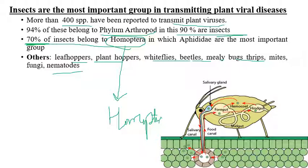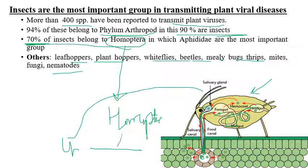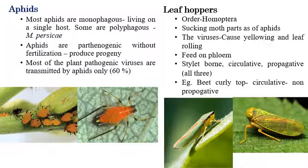After an insect sucks on plant cells, the virus present in the plant can be acquired and moves to the foregut. In circulative-type transmission, the virus circulates throughout the body, goes to the hindgut and hemolymph. When the infected insect vector feeds on an uninfected leaf, the virus present in the insect is injected into the uninfected plant, causing virus transmission.